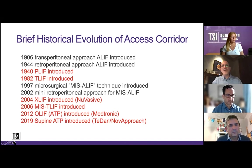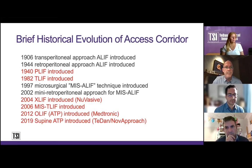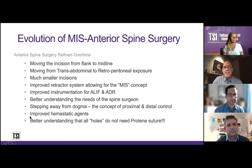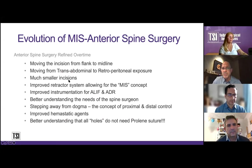A new technique we're starting to do is the supine oblique approach, or supine ATP. The evolution in the anterior space happened really by changing where you put your incision — we used to do it flank, now we do it midline; we used to do transabdominal, now we do retroperitoneal; we used to make big incisions, now we make small incisions. In my opinion, today's ALIF is MIS.